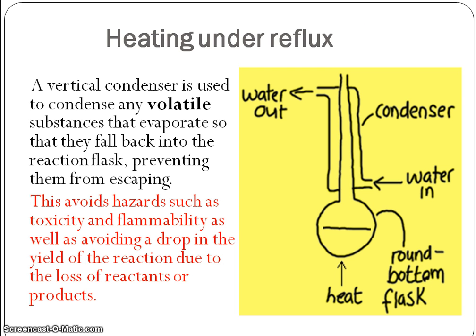The lab process involves heating under reflux, a particular technique used to heat volatile substances for extended periods of time. The substances are condensed from the gas phase back to the liquid phase, which falls back into the flask. This is particularly useful for toxic and flammable materials, preventing any loss of reactants or products. We'll be talking about this technique in much more detail in a later topic.